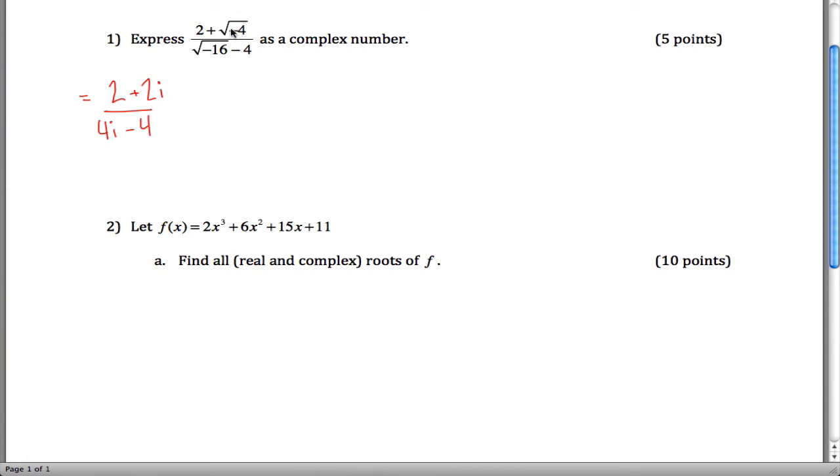And the reason why is the square root of negative 4 is the same as the square root of negative 1 times the square root of 4. And the square root of negative 1 is this thing we define to be i. Square root of 4 is 2. So you get this.